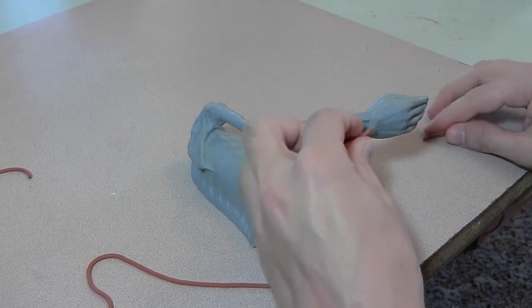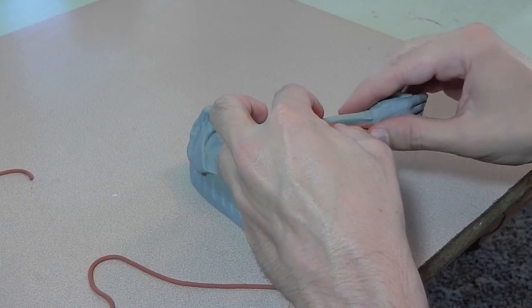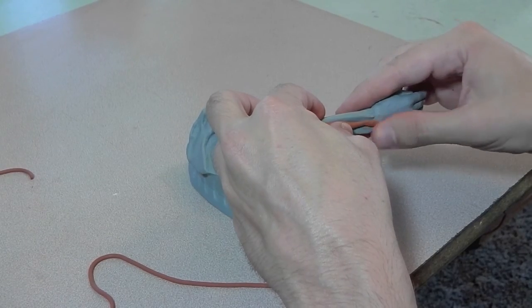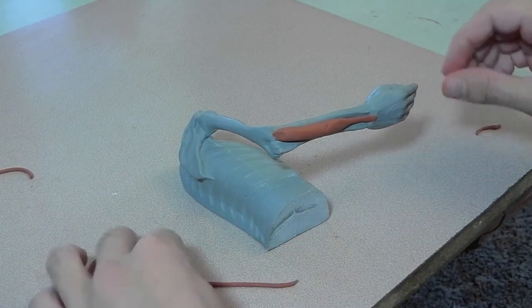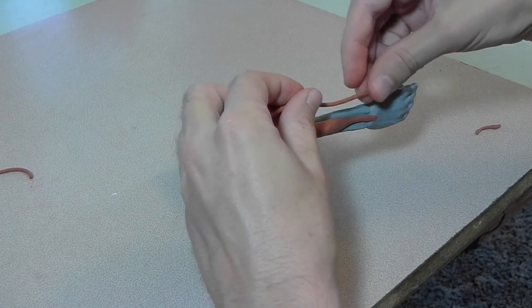And here are the muscles in clay. First I'm making the brevis, which is the one that attaches to the base of the middle finger. Next, I will attach the longus.